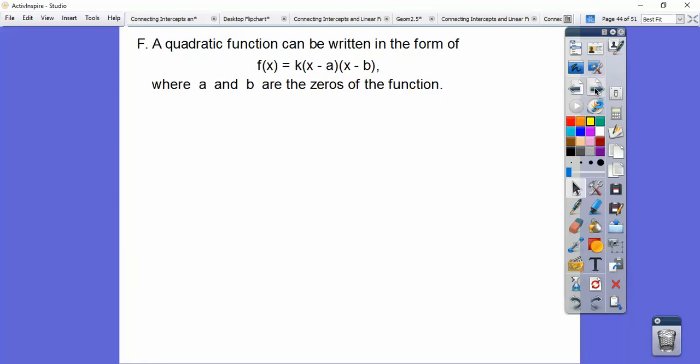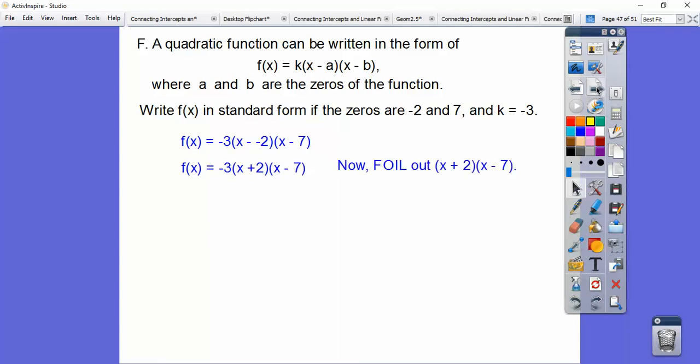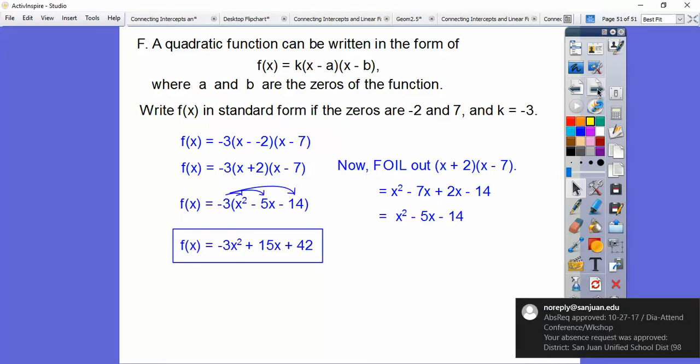A quadratic function can be written in the form, this is called intercept form. We'll discuss in module 8 right here. So where a and b are the zeros of the function. So write f of x in standard form, which is ax squared plus bx plus c. When the zeros are, here's a, and then here's b right here, and then plugging in k equals negative 3. So this is just a substitute in right there. So now we're going to go ahead and foil that out. So when we foil that out, we get that. So we're going to plug that back up in, and then we'll distribute that negative 3 through. So let's go ahead and do that, and there's our final answer.